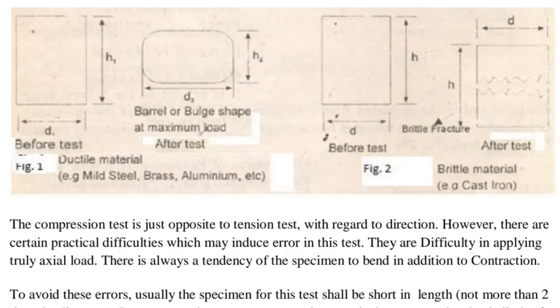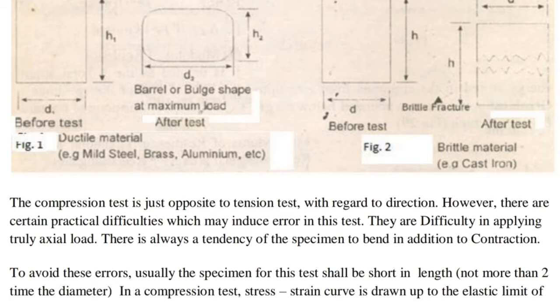The compression test is just opposite to the tension test with regard to direction. However, there are certain practical difficulties which may introduce error in this test. There is difficulty in applying a truly axial load, and there is always a tendency of the specimen to bend in addition to contraction. To avoid these errors, the specimen for this test shall be short in length, not more than two times the diameter.